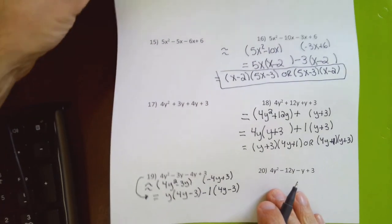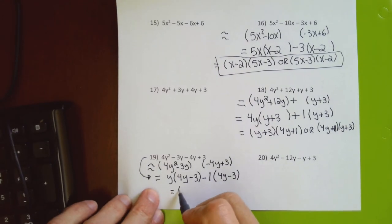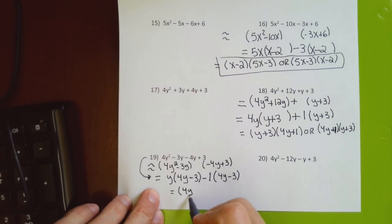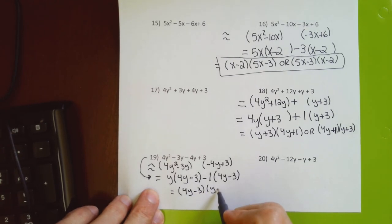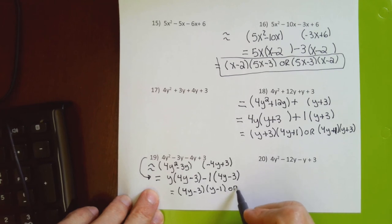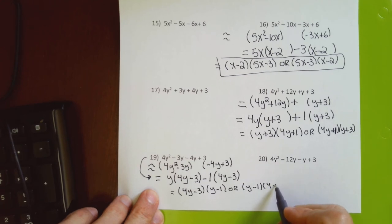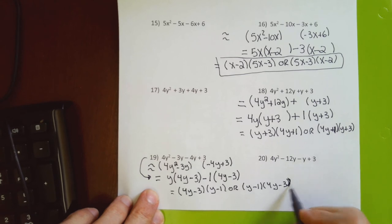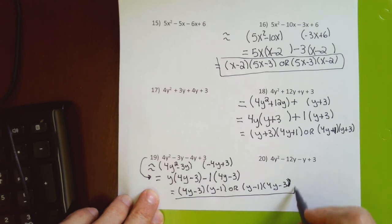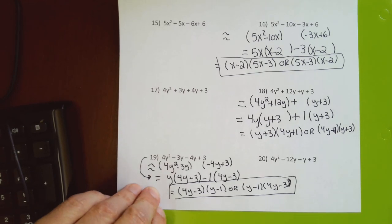The answer can be written as (4y − 3)(y − 1) or (y − 1)(4y − 3) — both are equally correct. Neither ordering is preferred; it's largely dependent on who originally taught you this skill.